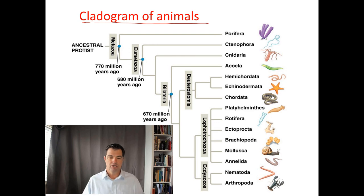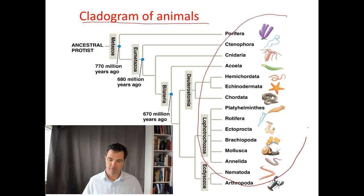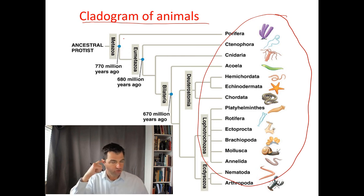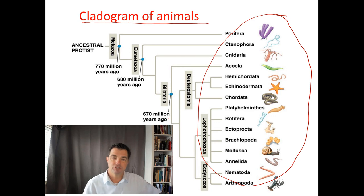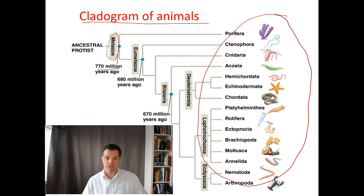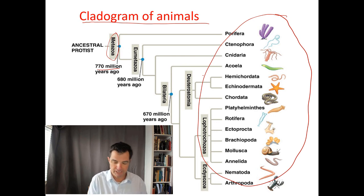Here we have our typical phylogram of all the different animal groups that we will cover. If you remember your geological timescale — which you need to remember as we continue throughout the class — these correspond to different geological events in that timescale. We're seeing that animals, the metazoan group, arise around 770 million years ago, and then break apart from there.